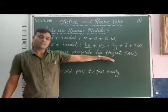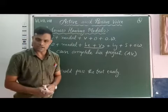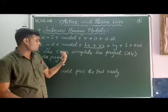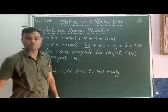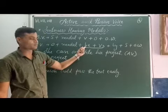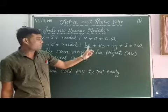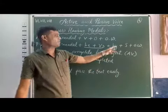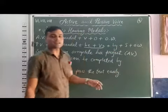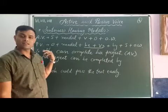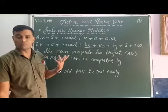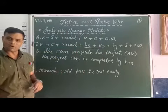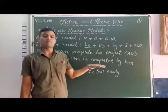Now let's transform this active voice sentence into passive voice. First, the object — 'her project.' After object, the modal — 'can.' After can, the 'be' form — 'be.' After be, V3 — the V3 of 'complete' is 'completed.' After V3, 'by.' After that, the subject — 'she' is a pronoun; its object pronoun is 'her.' There are no other words, so full stop. So the passive voice sentence is: 'Her project can be completed by her.'